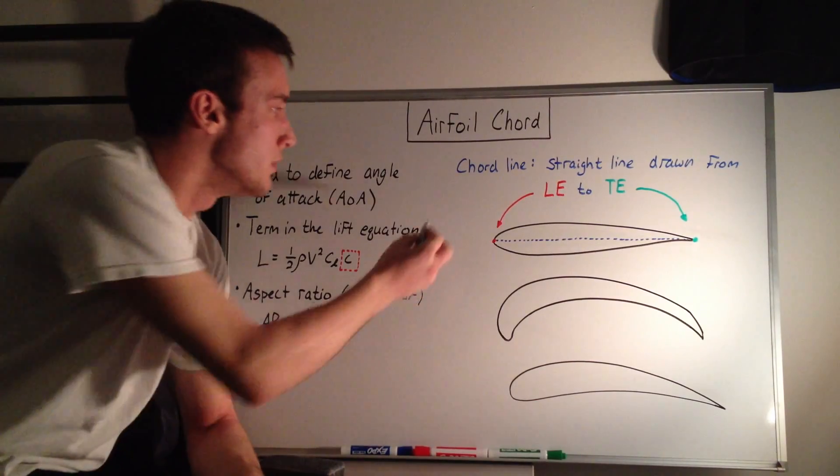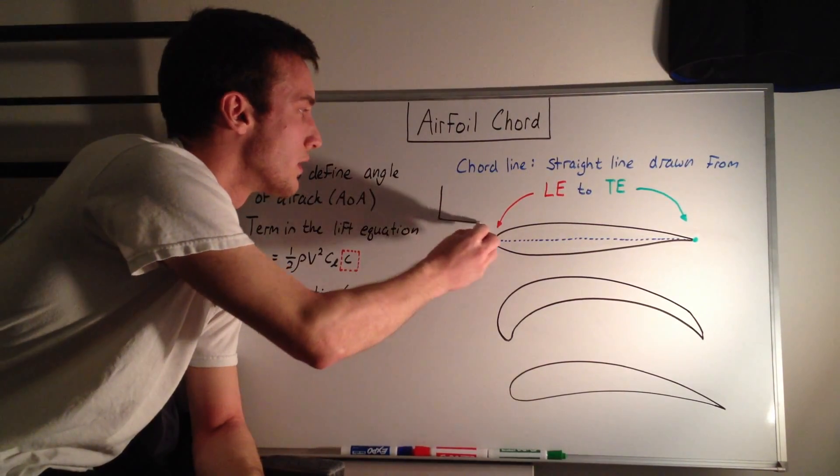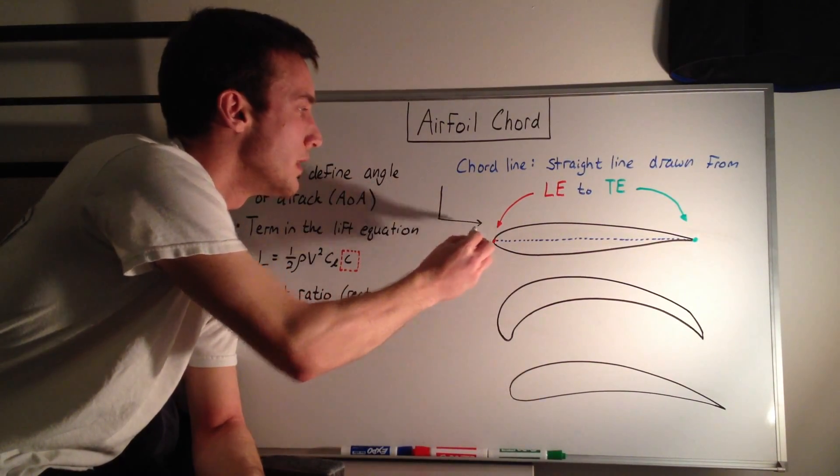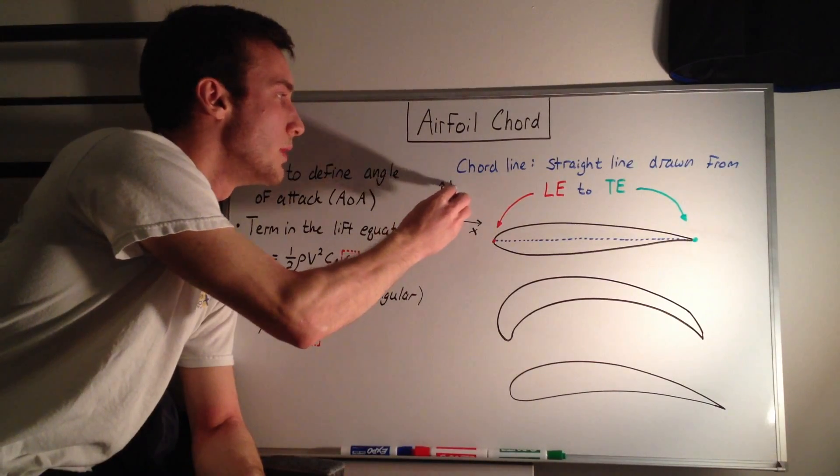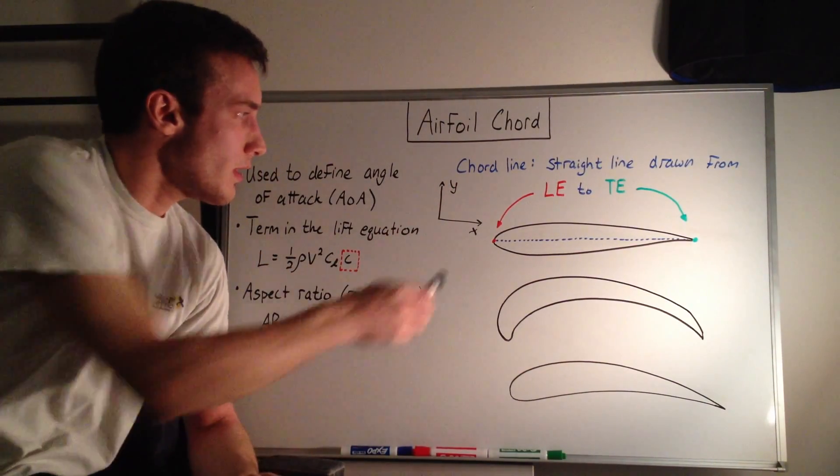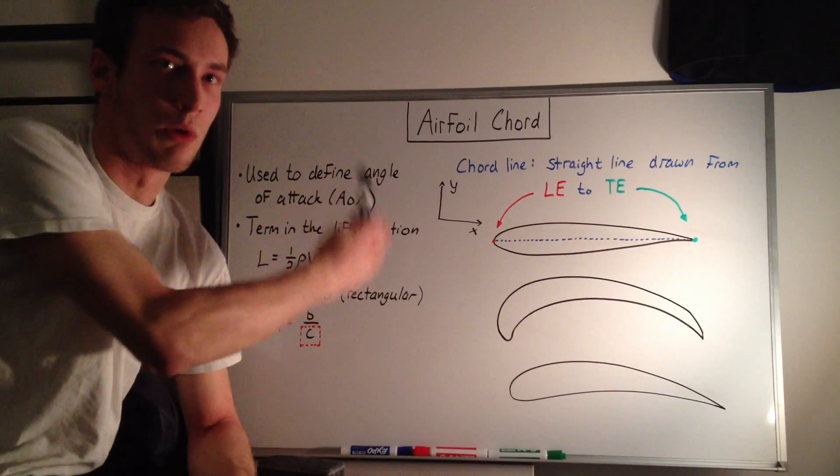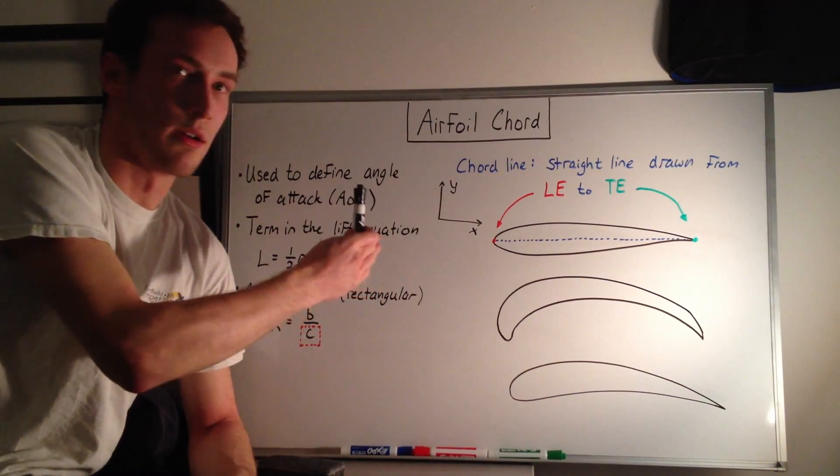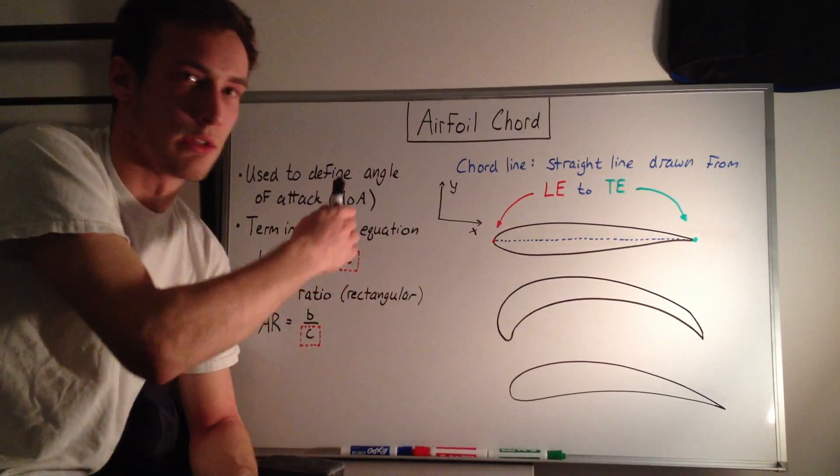Another way of describing this is if you put a coordinate system on here, with this being the x-direction and this being the y-direction, you can say that the leading edge is the smallest x-point, and the trailing edge is the largest x-point.